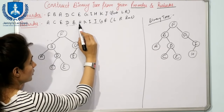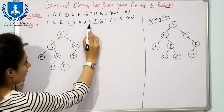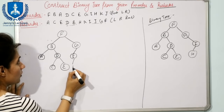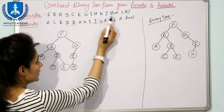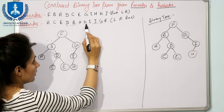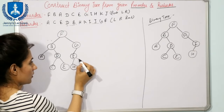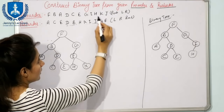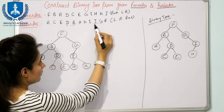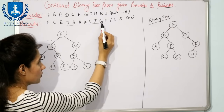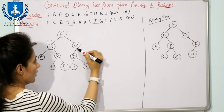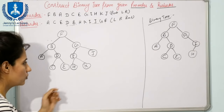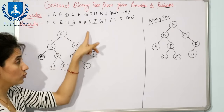Next is H. Find H in post-order - first element encountered is I. So H is part of I: write H as left child of I. Next is K. Find K - it is to the left of I, so K is part of I. Left of I is filled, so write K as right child of I. Next is J. Find J - it is part of G. Left child of G is already filled, so write J as right child of G. This completes the binary tree from this pre-order and post-order.